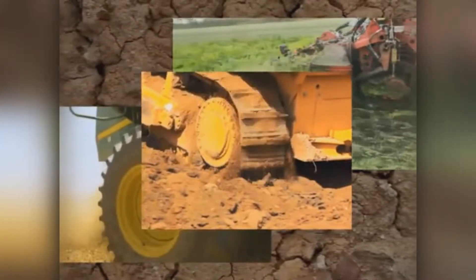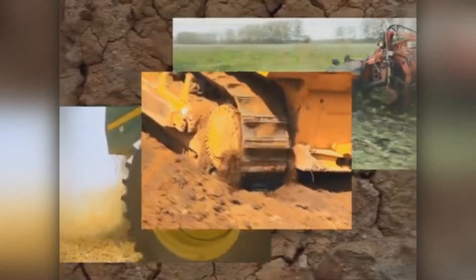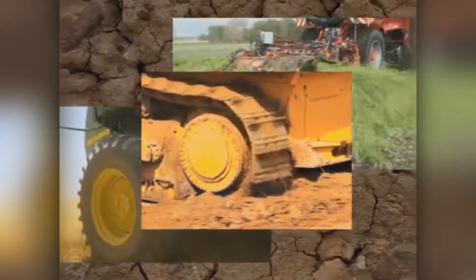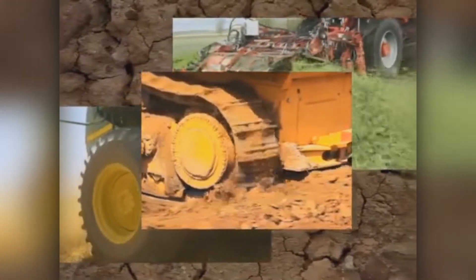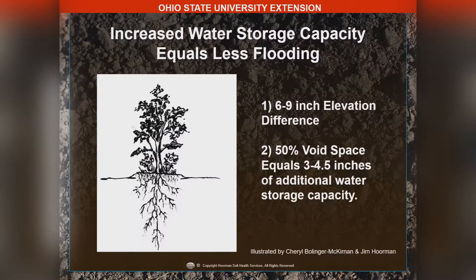We now have compacted layers not only six to eight inches deep, but when we're doing vertical tillage at two to four inches, we have compacted layers that are much more shallow. Is there a visual way to measure soil compaction? If you go down the road, you might notice every once in a while you'll see a fence row that looks like there's an elevation difference.